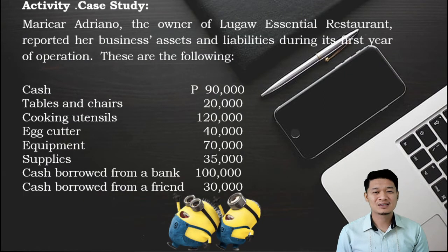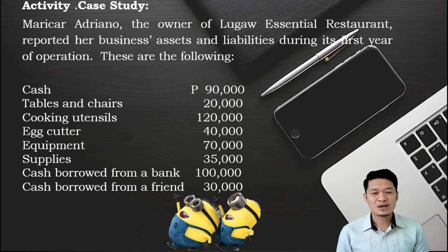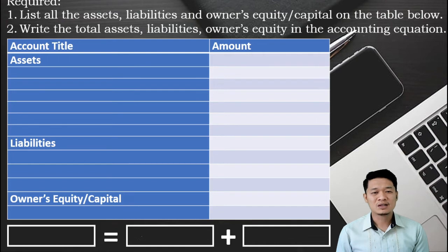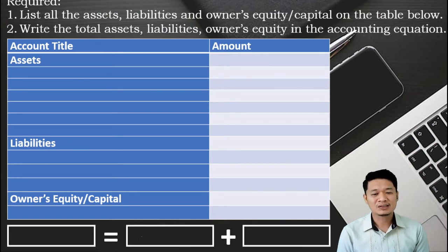For our activity today, it's all about a case study. Maricar Adriano, the owner of Lugal Essential Restaurant, reported her business assets and liabilities during its first year of operation. These are the following: cash, 90,000 pesos; tables and chairs, 20,000 pesos; cooking utensils, 120,000 pesos; egg cutter, 40,000 pesos; equipment, 70,000 pesos; supplies, 35,000 pesos; cash borrowed from a bank, 100,000 pesos; cash borrowed from a friend, 30,000 pesos. Requirements: list all the assets, liabilities, and owner's equity or capital on the table. Write the total assets, liabilities, and owner's equity in the accounting equation. You may pause this video and play it again when you are done.